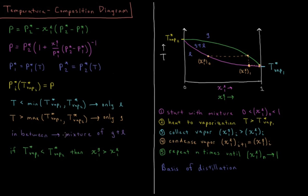If the boiling point of pure liquid 1 is lower than the boiling point of pure liquid 2, then the mole fraction of liquid 1 in the gas is going to be greater than the mole fraction of liquid 1 in the liquid. Based on the varying boiling points of these two liquids in solution, we can describe the physical basis of why distillation is possible. This is all assuming that we have ideal solutions at every single mole fraction.